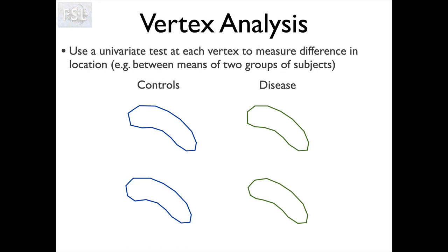In addition to getting a labeled image — which is very useful for making masks of different structures such as the hippocampus — another thing we can do with FIRST is look at how the shape and size of a structure changes either between different groups, such as a control group and a patient group, or over time due to training, plasticity, diet, or some other intervention. We can do that very directly with FIRST because there's an option called vertex analysis. Vertex analysis looks at how these things change by using the boundary points — the vertices which sit on the surface of these structures — going vertex by vertex to examine how they change.